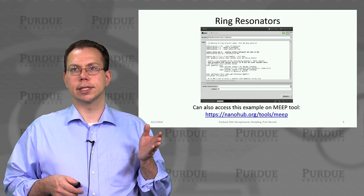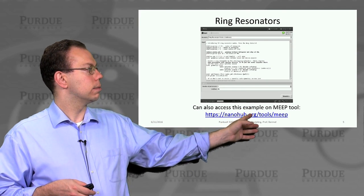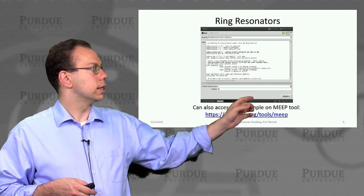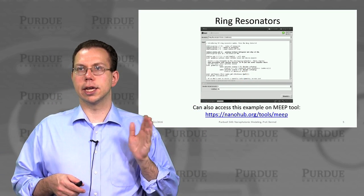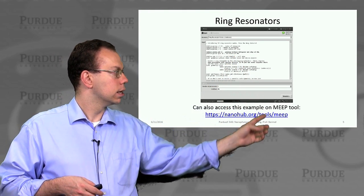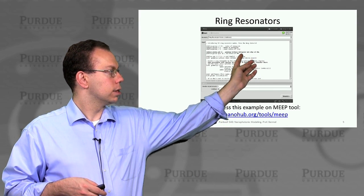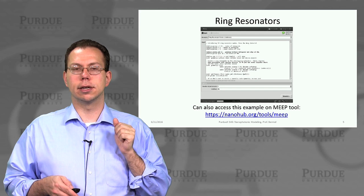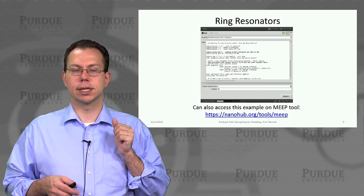If you want to try this on your own computer, you can go to nanohub.org/tools/meep and run MEEP yourself. This example is already built in and has a lot of the code already there. One thing you can try changing is the radius of the ring — in this particular example the default is 1, but you can see it's one of the early parameters and you can change it to whatever you want. You can also change the refractive index and see how those affect the performance. In the next lecture, we'll talk more details about what you get from ring resonators in performance.